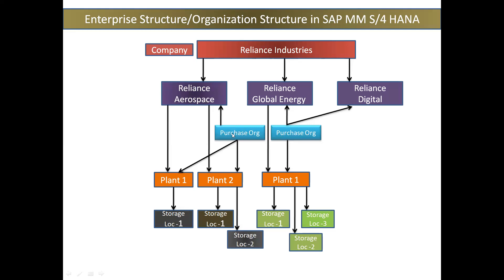This purchase department will buy for the company for a particular plant. Whatever the need they have in different plants — maybe in plant one they have different business, maybe in plant two they will have a different operation — they can use different materials and different activities in both these two plants.